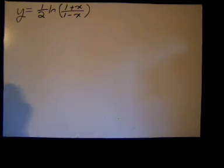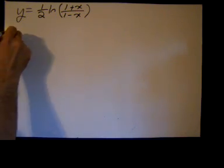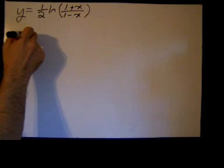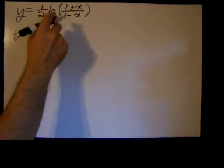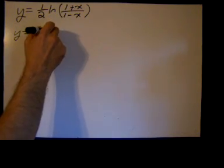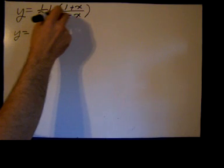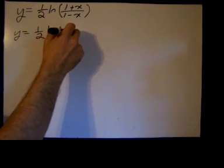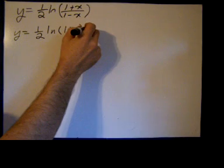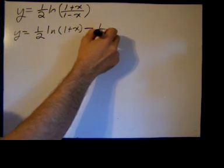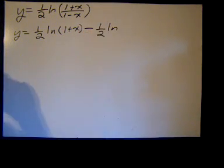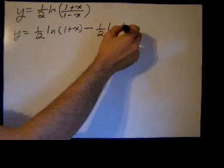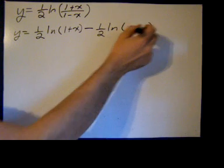We're going to use properties of logarithms to make this an easier task. So we'll have y equals one-half, and we have a quotient here. So I can break this expression up into the natural log of one plus x minus, and then that one-half distributes through, so don't forget that, the natural log of one minus x.